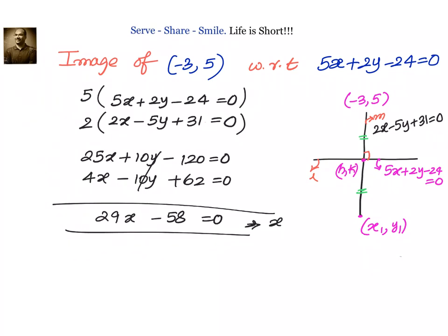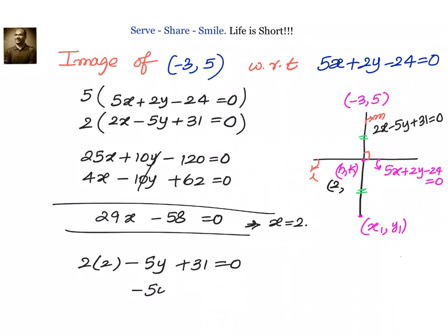Simplifying: x = 2, so h = 2. To find k, substitute x = 2 into 2x - 5y + 31 = 0: 4 - 5y + 31 = 0, giving -5y + 35 = 0, so y = 7. Therefore, h comma k, the foot of perpendicular, is (2, 7). Now we have the original point (-3, 5), the foot of perpendicular (2, 7), and we need to find x1 comma y1, the image.